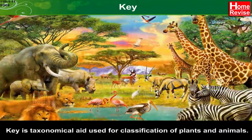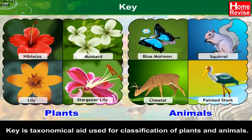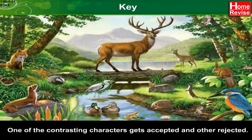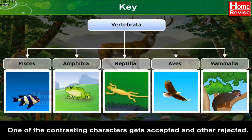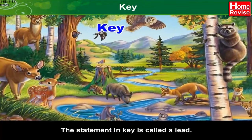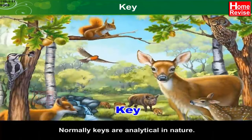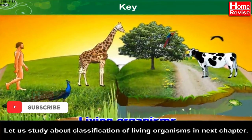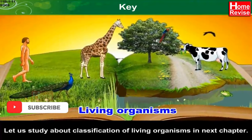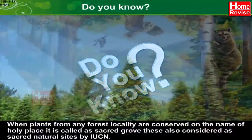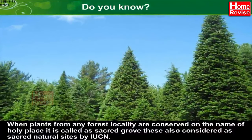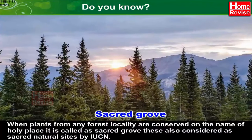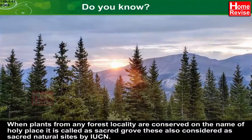Keys are a taxonomical aid used for classification of plants and animals. The keys are based on contrasting characters — one of the contrasting characters gets accepted and the other rejected. The statement in a key is called a lead. Normally, keys are analytical in nature. We will study the classification of living organisms in the next chapter. Do you know? When plants from any forest locality are conserved in the name of a holy place, it is called a sacred grove. These are also considered as sacred natural sites by IUCN.